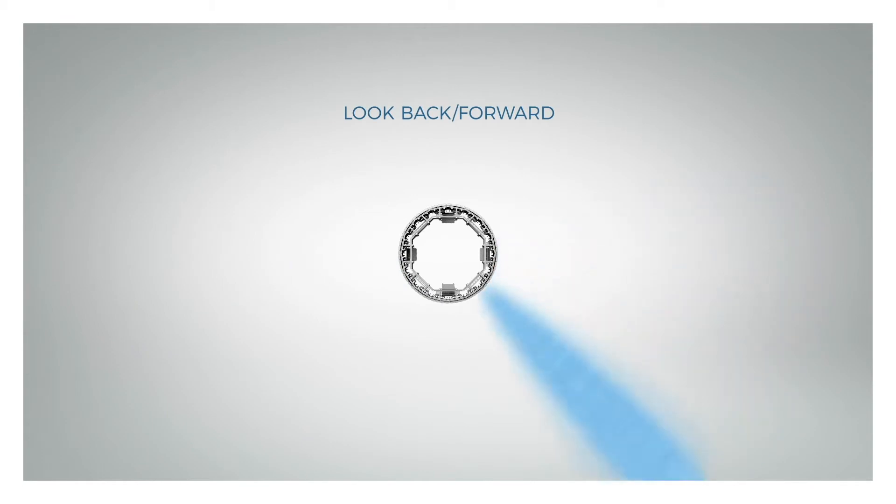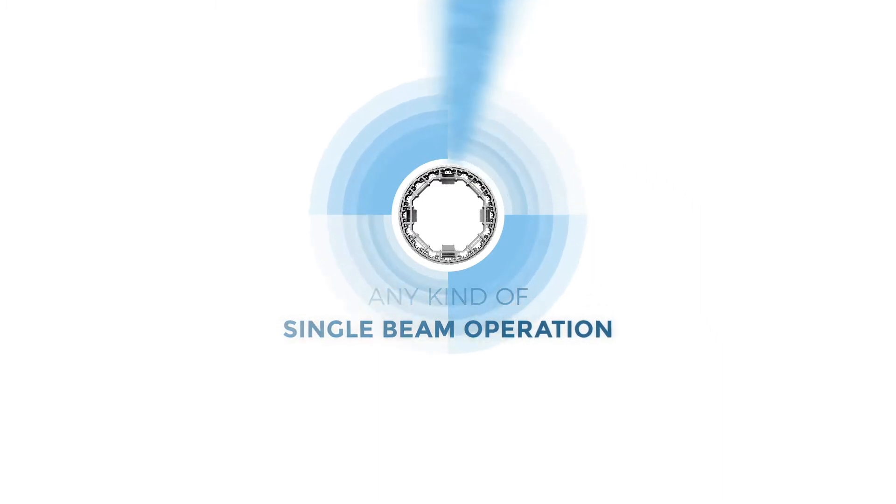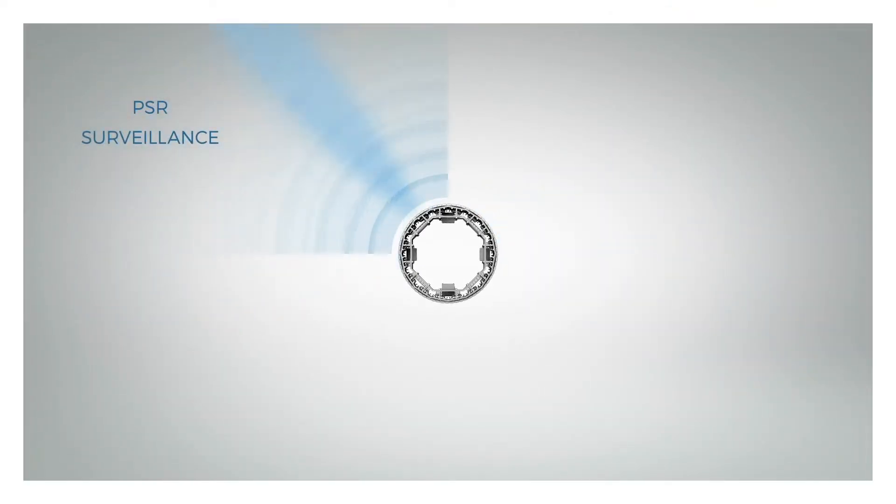The LISA technology allows for any kind of single beam operation. Up to four sectors of the antenna system ring can be operated in parallel in different L-band applications, such as PSR surveillance, SSR IFF surveillance, PSR tracking, or single beam pointing for target illumination.